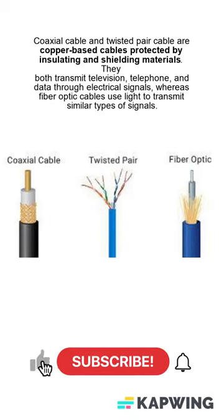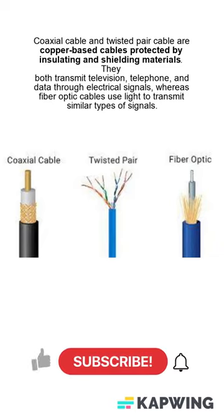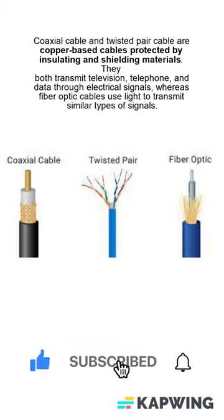Today we are going to be taking a look at the twisted pair wire and the coaxial cable. The coaxial cable and the twisted pair cable are copper-based cables protected by insulating and shielding materials.